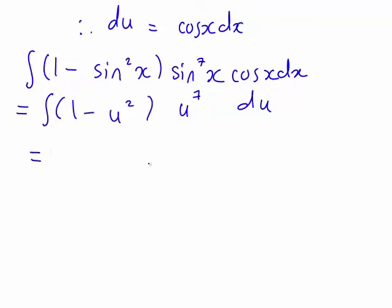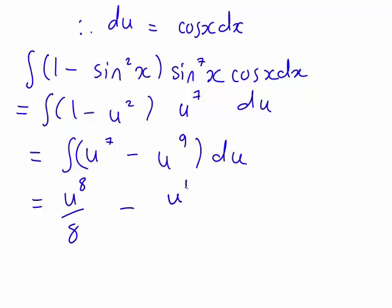Before we evaluate that, we now need to expand the brackets so that will become u to the power of 7 minus u to the power of 9 that we're wanting to integrate with respect to u. Now it's just going to be u to the power of 8 divided by 8 minus u to the power of 10 divided by 10 plus c when we're working out that integral.